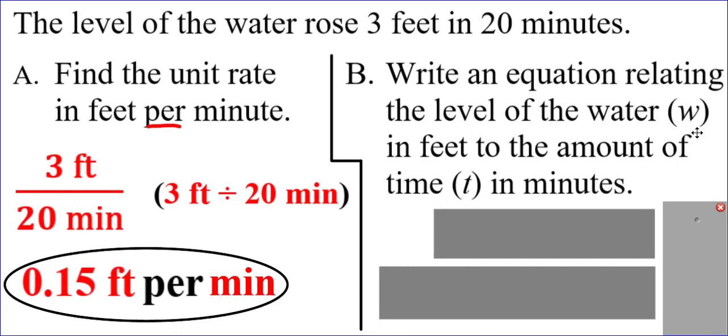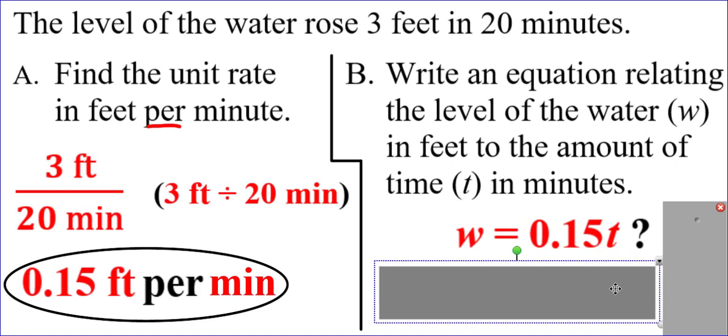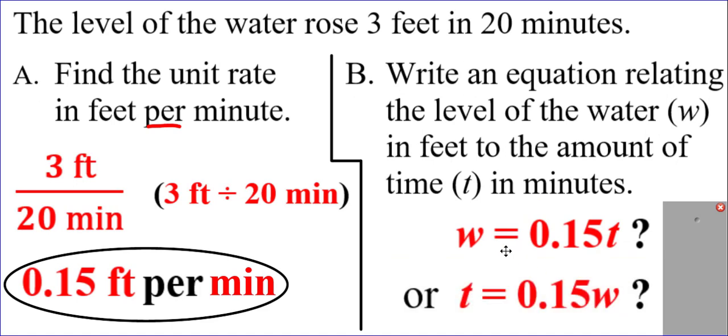They're telling us to pick w instead of f. That's the level of water in feet. And they're asking us to pick t instead of m for the time in minutes. The question you have to ask yourself is: what's the correct order for your equation? Is it w first and then 0.15 times t? Or is the t first and then 0.15 times w? How do we know what's the correct order?